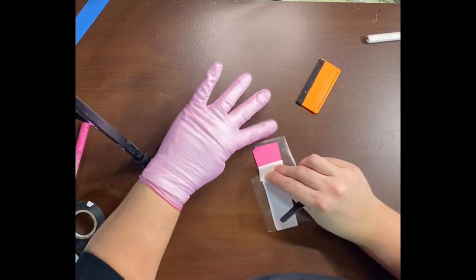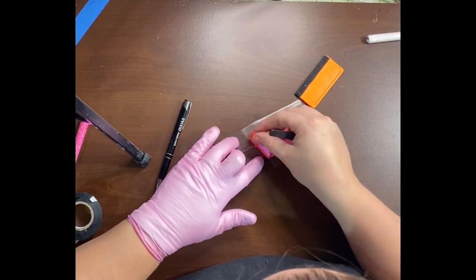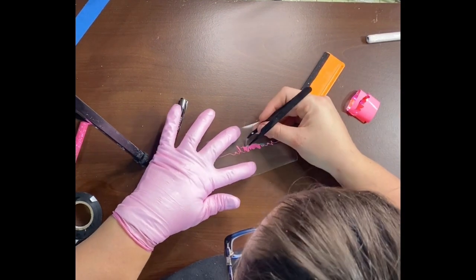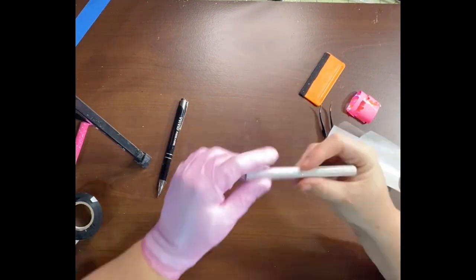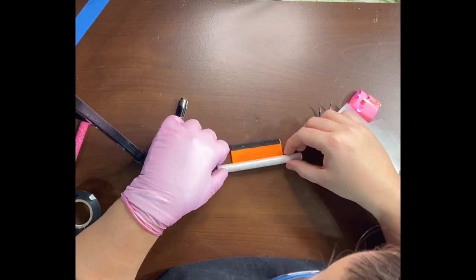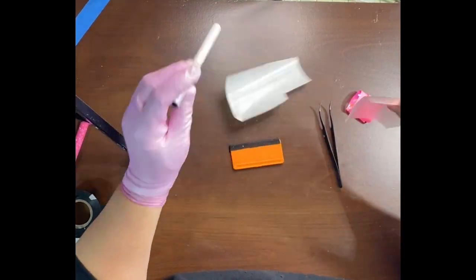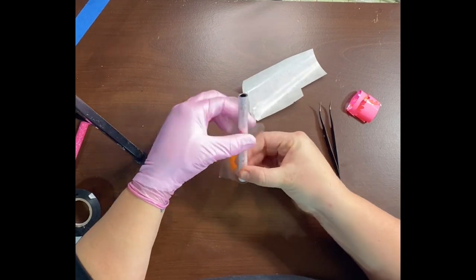So I almost always reverse weed on small vinyl cuts. This is a metallic, so it's even more of a pain in the butt. But how you reverse weed is you add your transfer onto the vinyl and then weed it off of there. You can even put it on your surface and then weed it off of there also.